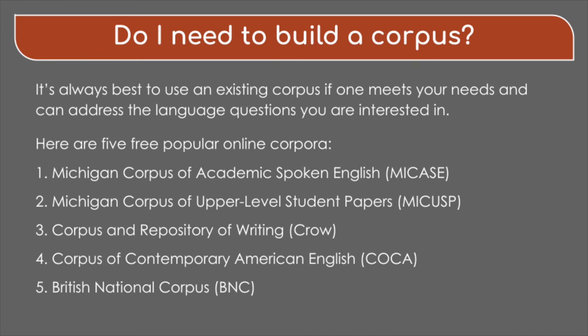The next two corpora are general corpora, so they represent a range of different types of language. The Corpus of Contemporary American English, also referred to as COCA, represents American English, and the British National Corpus represents British English. These two corpora have different registers or types of language represented — spoken language, fiction, and academic language — so they are nice for showing the contrast between academic language and news language.